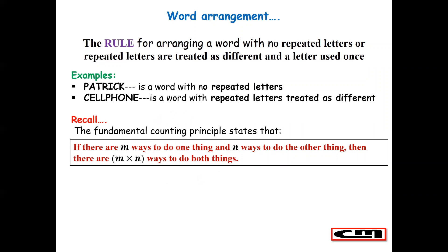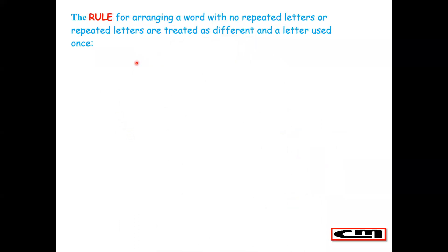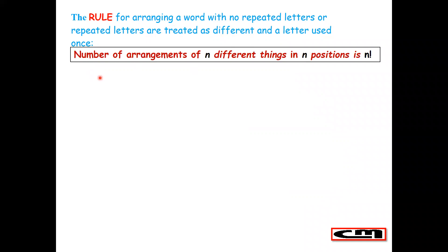The rule for arranging a word with no repeated letters, or repeated letters treated as different, and each letter used once is as follows: the number of arrangements of n different things in n positions is n factorial. If we have n different things positioned in n different positions, then we can arrange them in n factorial ways.